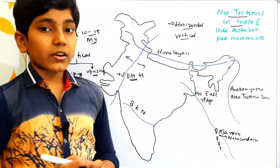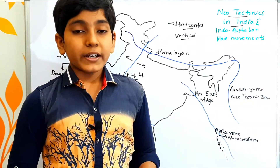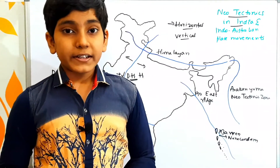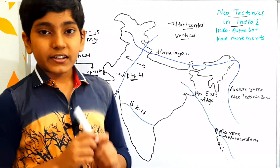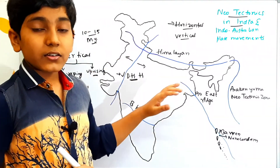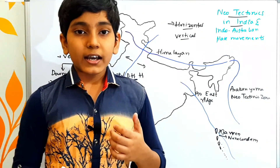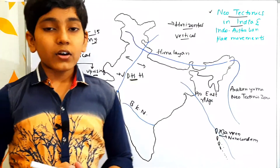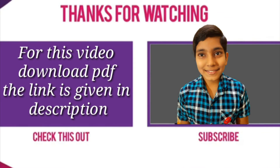We have seen about neotectonics in India. In the near future, about 5 to 10 million years later, India would be dividing into two parts — one to the west and another towards the south. The plate margin is at the Delhi-Haridwar-Harishil Ridge, where the northwestern part and the whole of India would be divided, leading to the formation of an ocean known as the Indo-China Ocean. This is about neotectonics in India and the Indo-Australian plate movements. The PDF notes of this video are given in the description below. Please like this video and subscribe to the YouTube channel. Thank you.